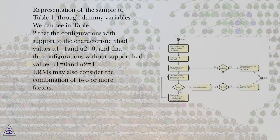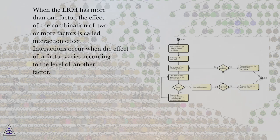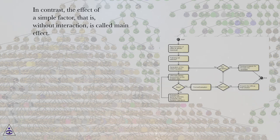LRMs may also consider the combination of two or more factors. When the LRM has more than one factor, the effect of the combination of two or more factors is called interaction effect. Interactions occur when the effect of a factor varies according to the level of another factor. In contrast, the effect of a simple factor, that is, without interaction, is called main effect.